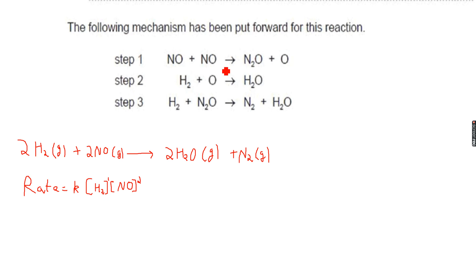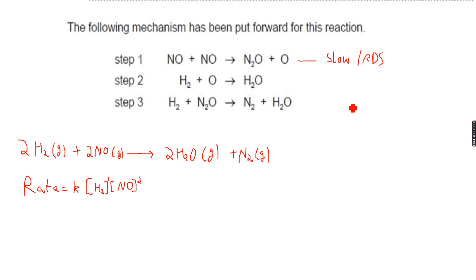In step one, two molecules of NO react to give N₂O plus O. If I said that this is the slowest step, I would be wrong, because this would suggest that by the time the slowest step has completed, two molecules of NO react and zero molecules of H₂ react. If that were the case, the rate equation would have been k[NO]² only — because if the first step was the slowest step, then by the time the slowest step has happened, only two molecules of NO have reacted.